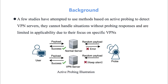To mitigate this issue, a few studies have attempted to use methods based on active probing to detect VPN servers. However, these methods still have two limitations: they cannot handle situations without probing responses, and are limited in applicability due to their focus on specific VPNs.